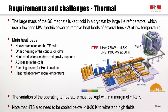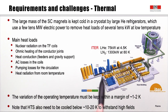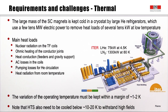In terms of thermal requirements, the large mass of superconducting magnets must be kept very cold in a cryostat that uses very large helium refrigerators — typically a few tens of megawatts of electrical power to remove heat loads of several tens of kilowatts at low temperature. The ITER cryo system has a cooling power of 75 kilowatts at 4.5 Kelvin for the helium circuit and 1.3 megawatts at 80 Kelvin for the liquid nitrogen circuit.